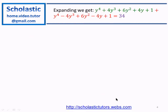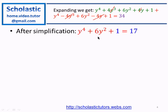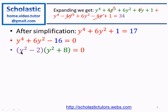Now we simplify further. The 4y³ and −4y³ terms cancel, as do the 4y and −4y terms. After simplification we get 2y⁴ + 12y² + 2 = 34, which gives y⁴ + 6y² + 1 = 17, so y⁴ + 6y² − 16 = 0. Factorizing — we need two numbers whose product is −16 and sum gives 6y²; using 8 and −2: (y² + 8)(y² − 2) = 0.